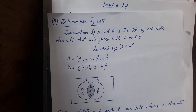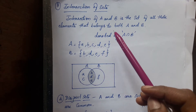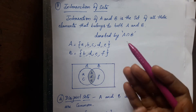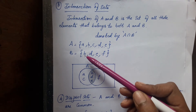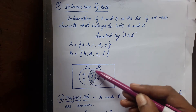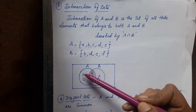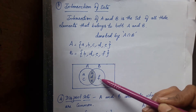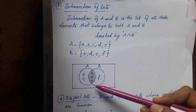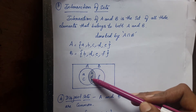Similarly, intersection of sets. Intersection of sets A and B is the set of all those elements that belong to both A and B — the common elements. Here B, D, and E are common to both sets, so they are written in the middle. A and C are the remaining elements in set A, and F is the remaining element in set B. For intersection, shading is important: we shade only the middle part — B, D, E — because those are the common elements.